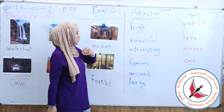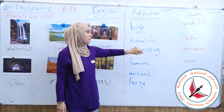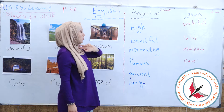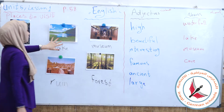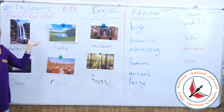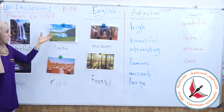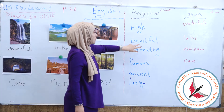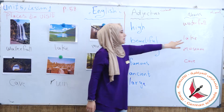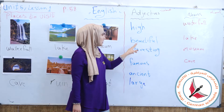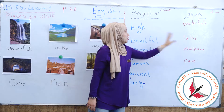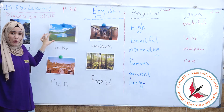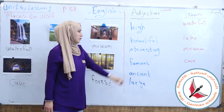The second adjective: beautiful. Look at this lake — it's beautiful. So we say: beautiful lake. We describe this lake as beautiful — beautiful lake.